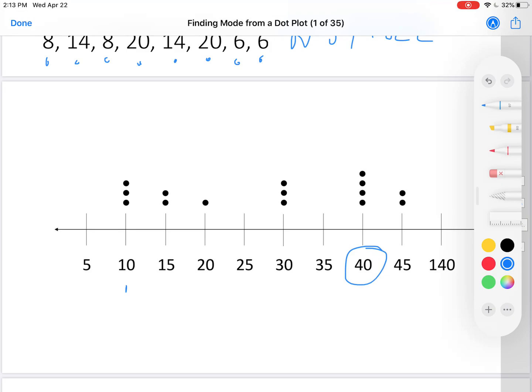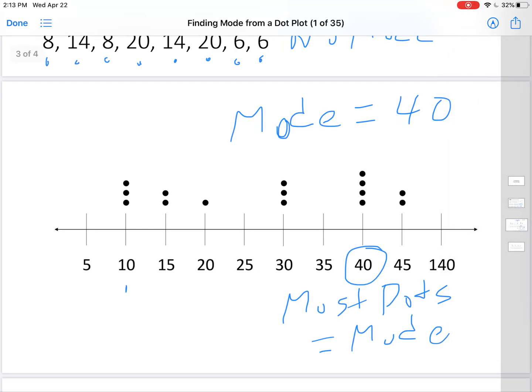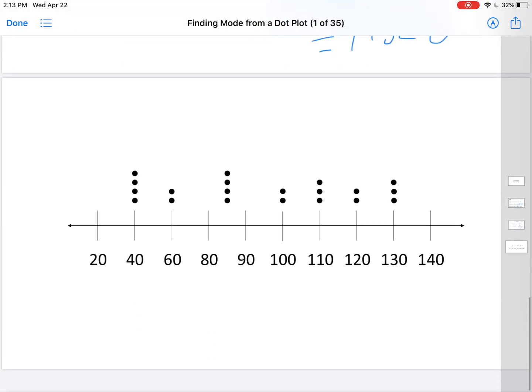It's the simplest thing in the world when you have a dot plot. The mode is the number that has the most dots. Most dots equals mode. The mode in this case is 40. For some reason, the O's aren't writing correctly. That's how you do mode for a dot plot.